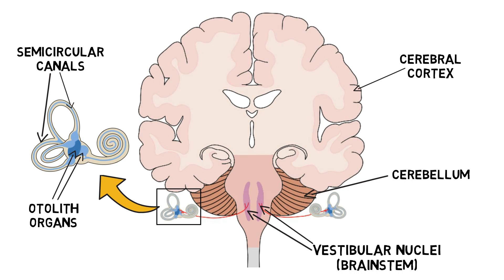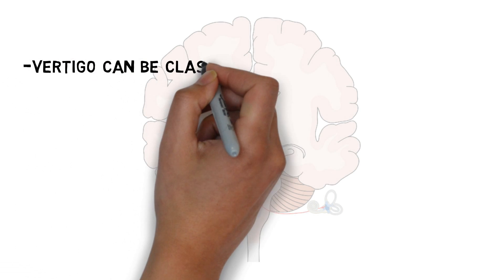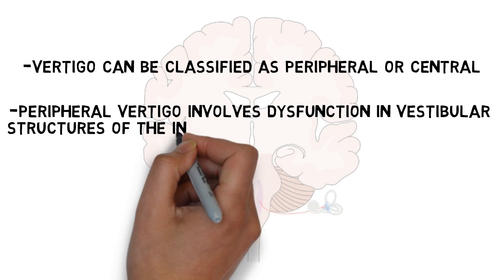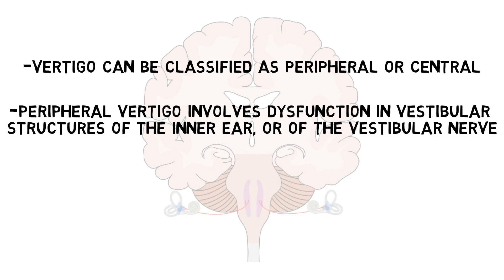Vertigo is typically associated with the disruption in function of either the vestibular system or one of the regions it communicates with to maintain our sense of balance and stability. Vertigo can be classified as peripheral or central, with peripheral vertigo referring to vertigo typically caused by dysfunction in the vestibular structures of the inner ear or of the vestibular nerve, which carries information from those structures to the brain.